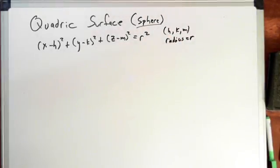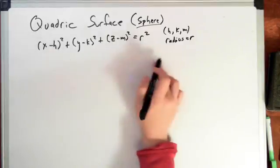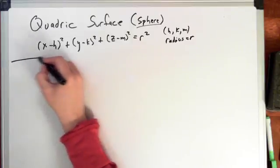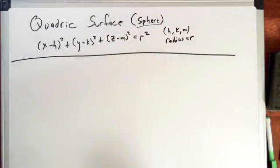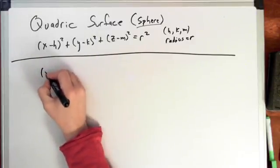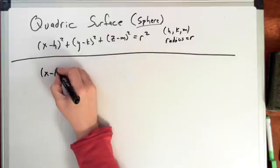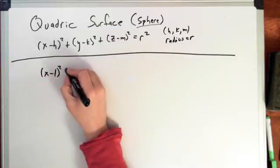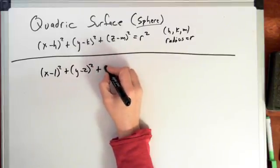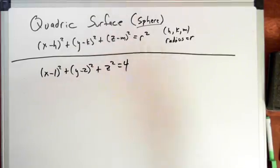Let's explore this a little bit more with an example. Let's plot some things out to really give us a better feel for what this is and how we can use it. So starting off, let's look at: x minus 1 squared plus y minus 2 squared plus z squared is equal to 4.